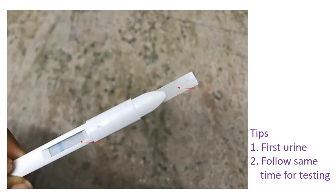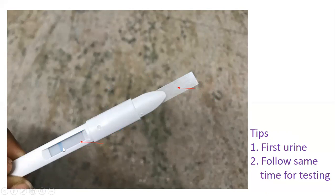We dip the paper strip in urine. Similar to a pregnancy test — you apply urine drops to the strip, and based on the hormones in the urine, you will get lines. If you don't know what to do, you'll get a little bit of time and then you'll see the lines appear.